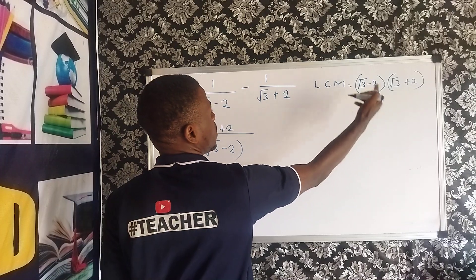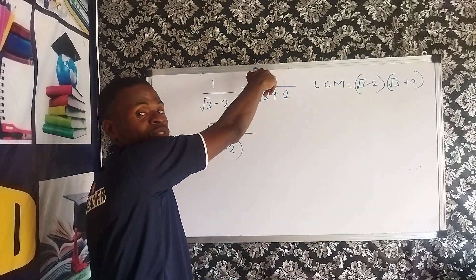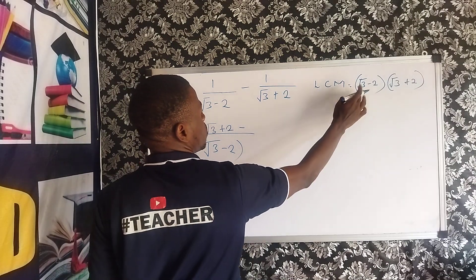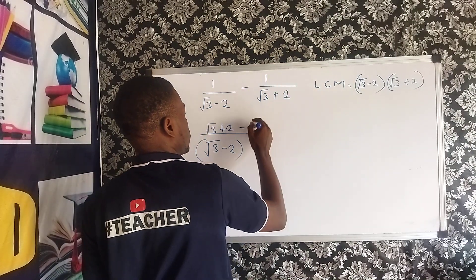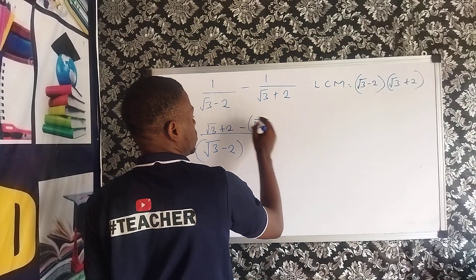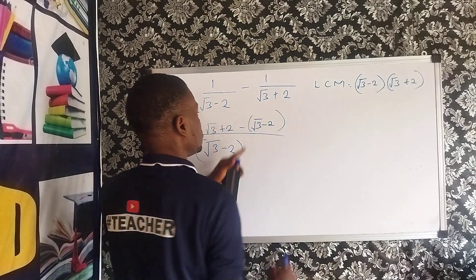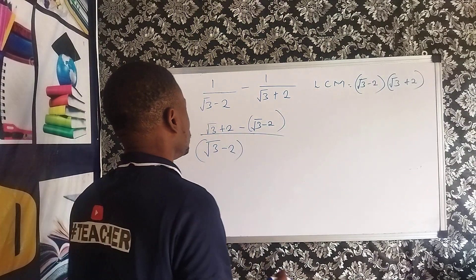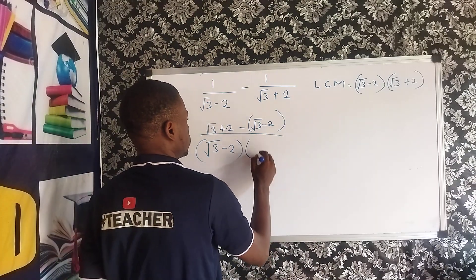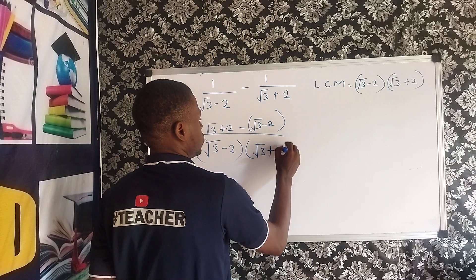Then, in this place, (root 3 minus 2)(root 3 plus 2) will give us root 3 minus 2. So, we now multiply by this numerator, which is 1. So, we now write that root 3 minus 2 times 1 — we have that bracket, that's (root 3 minus 2), close your bracket, since there's a negative sign here. So, we write root divided by root 3 plus 2.